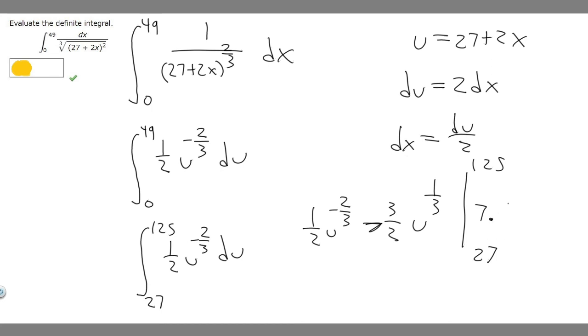Then we want to subtract whatever 27 is plugged into it. We have 3/2 times 27 to 1/3. 27 to the 1/3 is going to be 3. So we just have 3 times 3/2, which is 9/2, which equals 4.5. So we have 7.5 minus 4.5, which is 3. Our final answer to this problem is going to be 3.